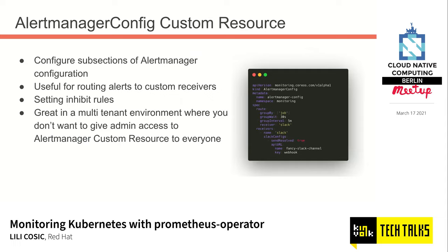The AlertManagerConfig custom resource, while not yet v1, is really great for a multi-tenant environment, and we plan on using it in OpenShift as well. It allows you to configure subsections of AlertManager — you can connect to one AlertManager instance but allow users who aren't admins to configure routing and receivers. It also allows configuring inhibition rules, which mute specified alerts when a group of alerts is firing. For example, if a node-down alert fires, you don't want 10 other alerts firing after that.